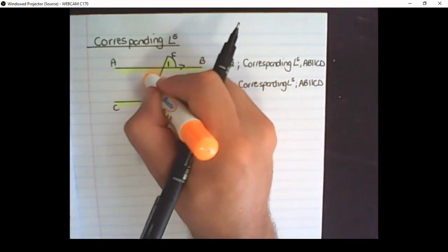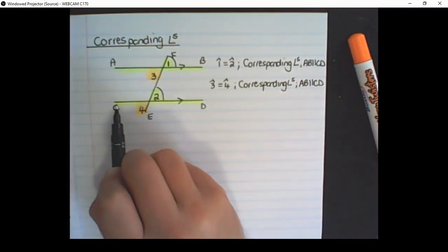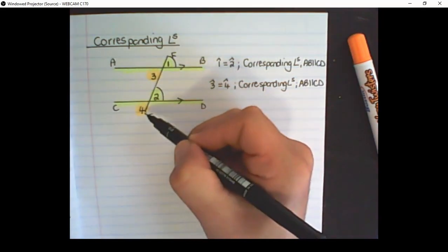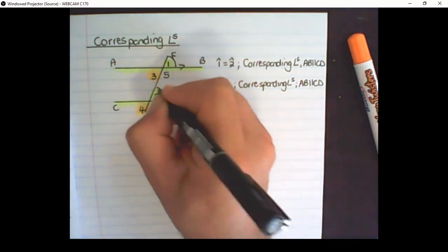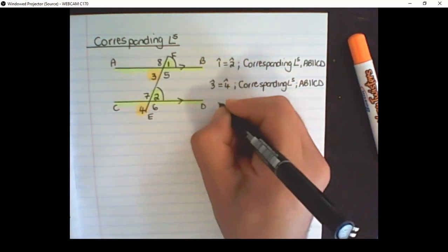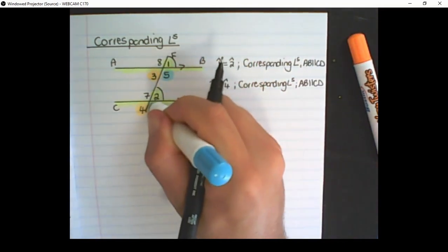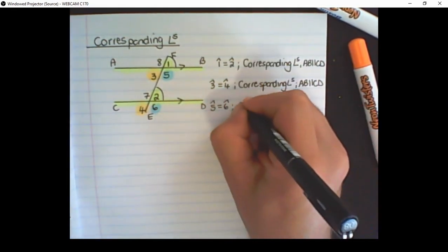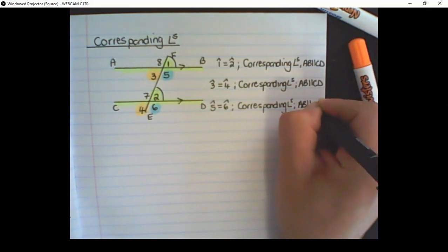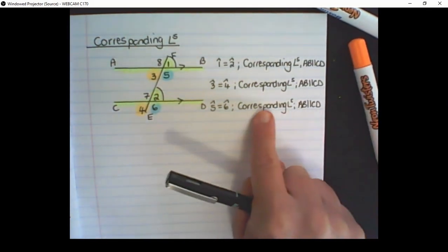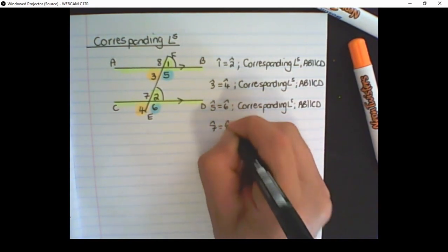Both of these angles are below the parallel lines — angle 3 is below AB and angle 4 is below CD, sharing the line EF, so they are equal. We can continue this pattern: angle 5 is equal to angle 6, as both are below the parallel lines and therefore corresponding. Remember, in geometry it is important to state the reason why a statement is true. The last pair of equal angles is angle 7 and angle 8.